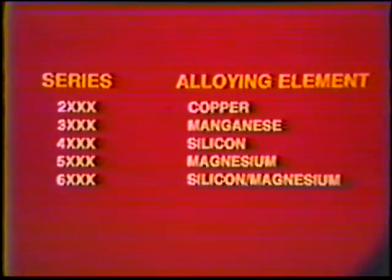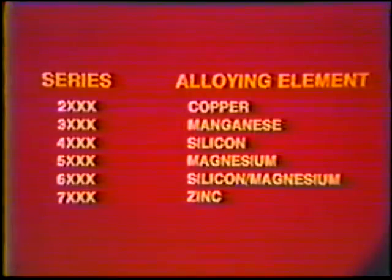Aluminum base metals are classified by the Aluminum Association using a four-digit number such as 4043 or 5356. The first digit indicates the major alloying element: the 1000 series is commercially pure aluminum with no major alloying elements; the 2000 series contains copper; the 3000 series, manganese; the 4000 series, silicon; the 5000 series, magnesium; the 6000 series, silicon and magnesium; and the 7000 series, zinc.